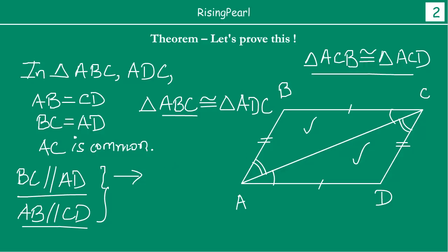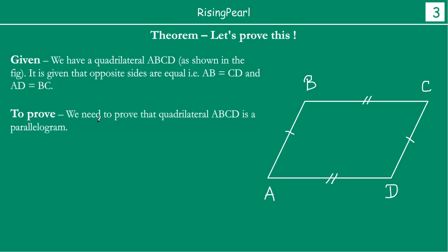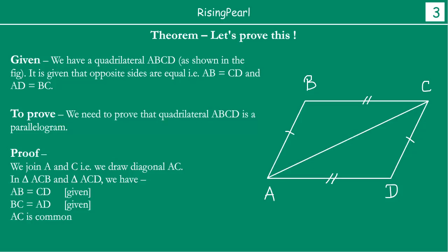Now we are going to show you how to write this nicely in your test. We always start with what is given and then we do the proof. It is given that we have quadrilateral ABCD. We are given that AB equals CD and BC equals AD. Next we write 'To Prove': we need to prove that quadrilateral ABCD is a parallelogram. Then we do our small construction: we join AC, that is we draw diagonal AC.